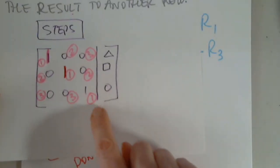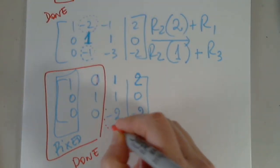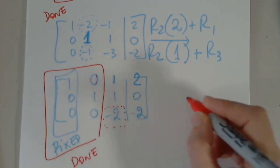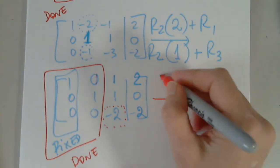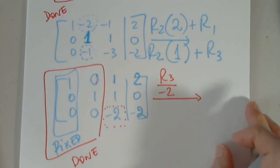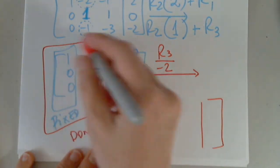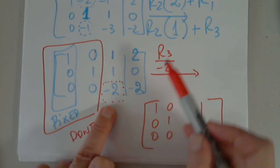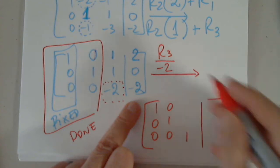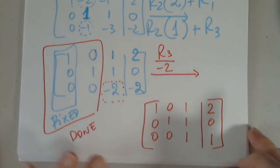Next, I need to get a one in here because this one will allow me to get the zeros at the top. So the question is, how do I get a one in here? Divided by negative two. Very good — we divide row three by negative two. So I copy all this; this cannot change. Negative two divided by negative two is one, negative two divided by negative two is one, and I copy the rest.